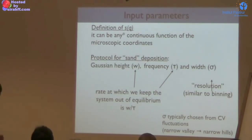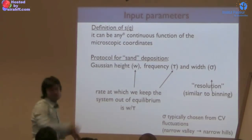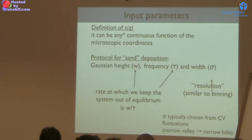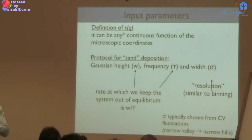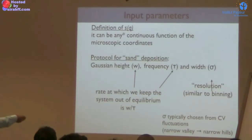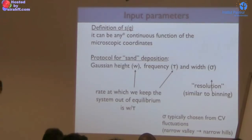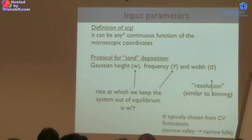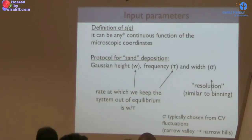You should choose tau so that W is smaller than kBT. Otherwise, when you add a Gaussian you make a big change to the equilibrium distribution — decreasing the probability of being at that point by a factor of e to the minus 1 if the height equals kBT. So typically people choose tau so that W is smaller than kBT. But the really critical quantity is the rate W over tau.